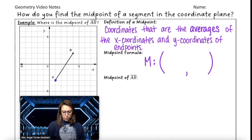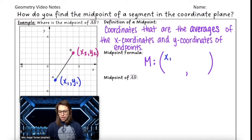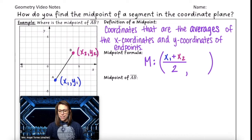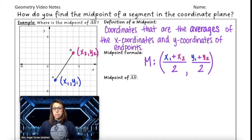Let's say the coordinates of A are in blue and the coordinates of B are in pink. All we're going to do is take the average of both. We take the x coordinate of point A, x1, and add it to the x coordinate of point B, x2, and divide those by 2. Then we do the exact same thing with the y's — add the y coordinate of point A with the y coordinate of point B and divide by 2. That will give you the point that is directly in between points A and B.